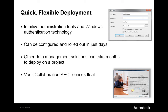Another key thing with Vault Collaboration is that the licenses float. There's no price differential between locked or networked licenses — they automatically are floating licenses. So you could buy 10 licenses and let it float between 20 users or whatever you have within your firm.